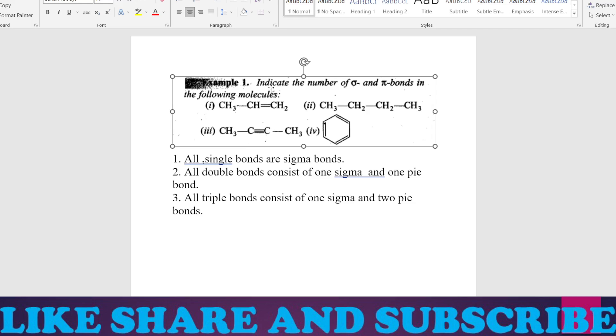So, some molecules, how will you find the number of sigma bonds and pi bonds? The main basic principles are that all single bonds are sigma bonds. All the sigma bonds that are present in a compound are counted as sigma bonds. All the double bonds, whenever you have a double bond, one will be sigma bonds and one will be pi bonds. If you have triple bonds then one will be sigma and two will be pi.